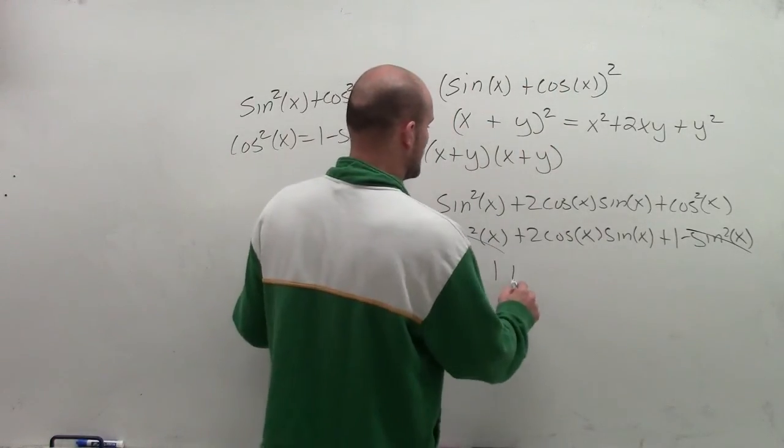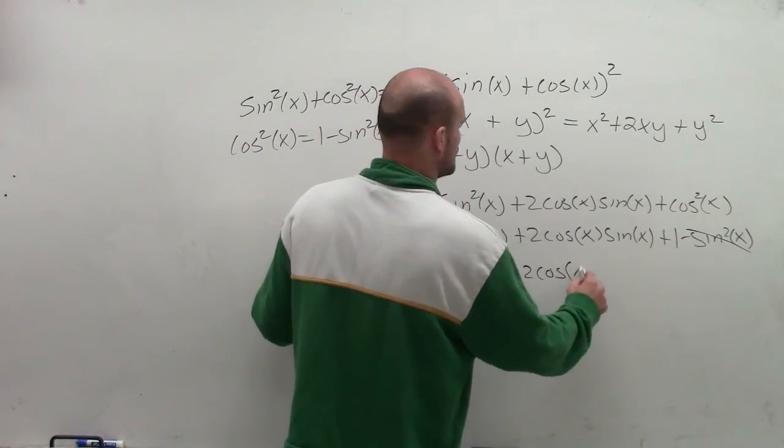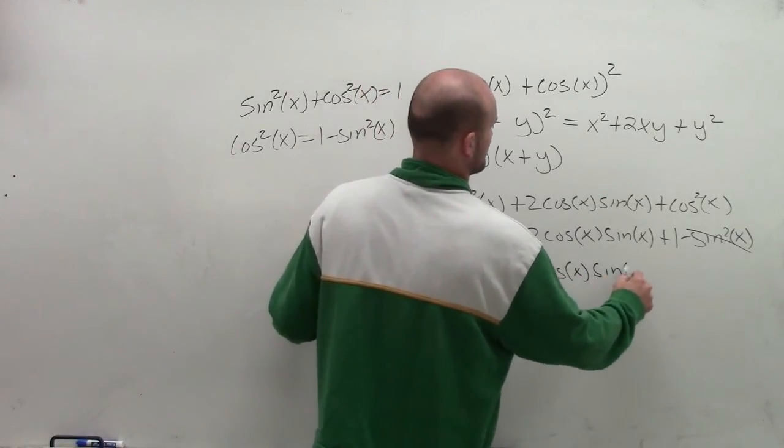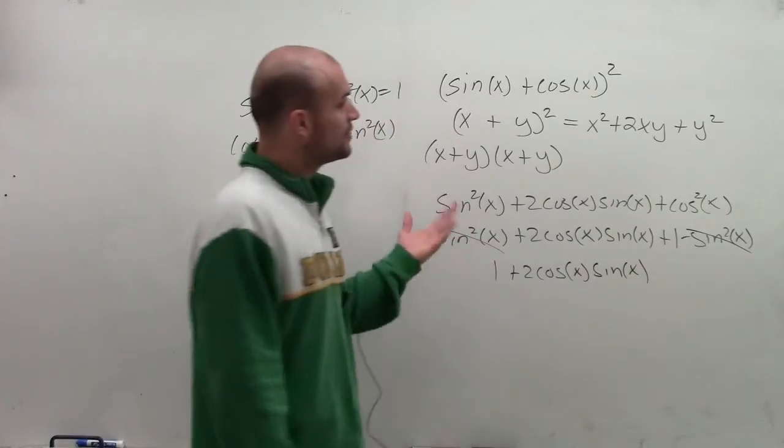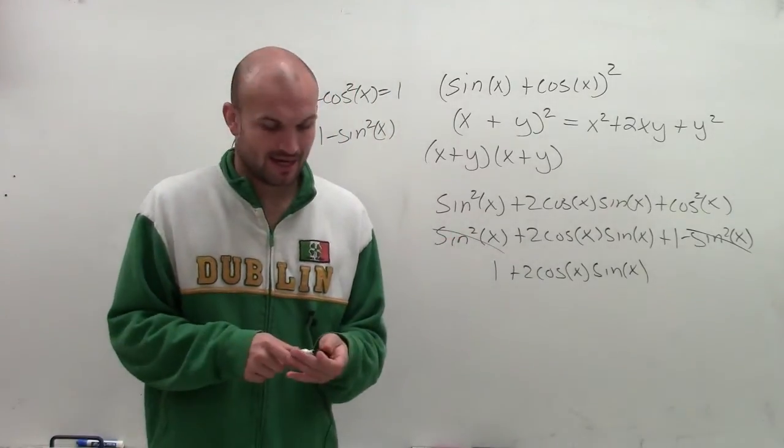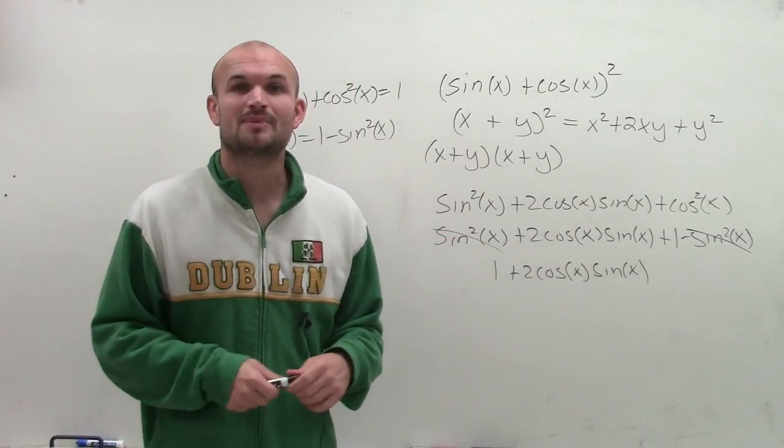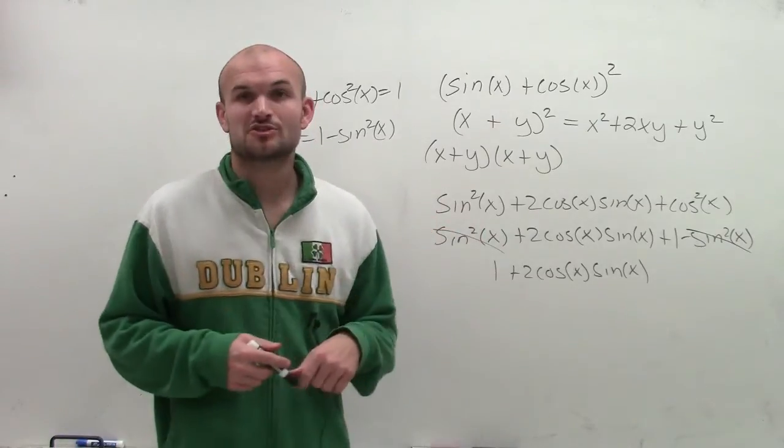Therefore, we're left with the final answer of 1 plus 2 cosine of x times sine of x. So there you go, that's a quick, easy review on how to multiply and simplify a trigonometric expression. Thanks.